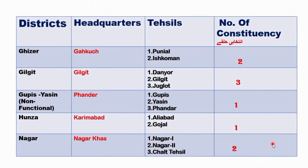The districts in Gilgit Division are: Ghizer, Gilgit, Gupis-Yasin — which is non-functional, meaning officially not declared but accepted since 2019 — Hunza, and Nagar. Out of these five, only Gupis-Yasin is non-functional; the remaining four districts are functional.